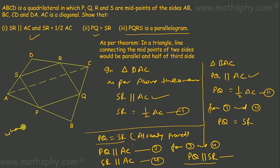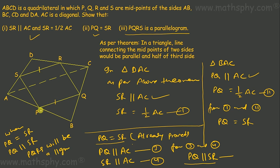Now, when PQ is equal to SR and PQ is parallel to SR, PQRS will be a parallelogram. As per the parallelogram theorem, if one pair of opposite sides is both equal and parallel, the quadrilateral will be a parallelogram. In quadrilateral PQRS, we have PQ equals SR and PQ is parallel to SR, so PQRS is a parallelogram.